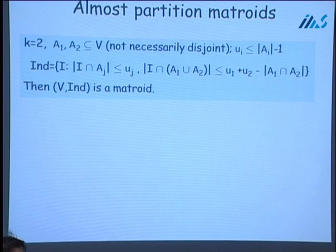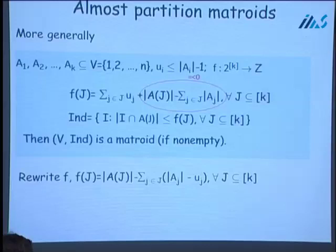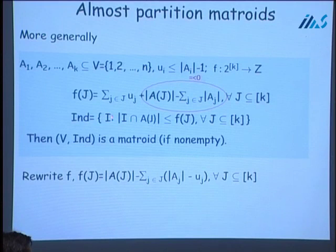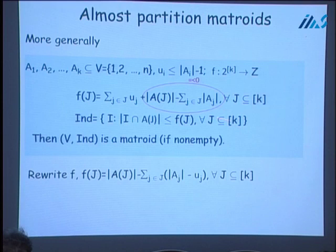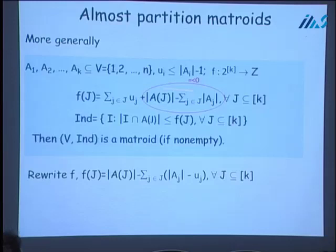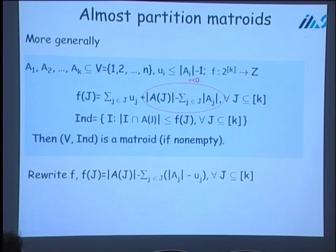In our work, we generalize this from two sets to many sets. For any subset J of {1,...,K}, we impose a constraint on the cardinality of the intersection between I and the union of the Aj's for j in J. Ideally we would like just the sum over j in J of Uj, but this doesn't work even for K equals 2. What does work is adding a correcting term that is always less than or equal to zero — it is zero when the sets are disjoint and very small when the sets are nearly disjoint. We can show that by doing this, we again get a matroid.